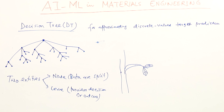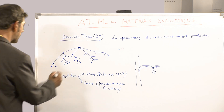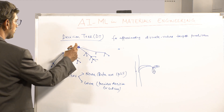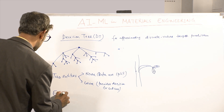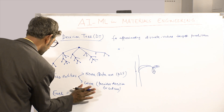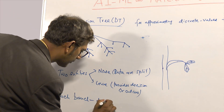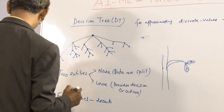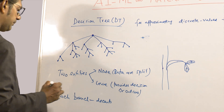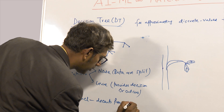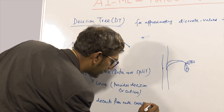The node and the leaf are the two important things to remember. The nodes are basically humidity, wind, and outlook — that is where data is split. The leaves are high humidity, low humidity, strong wind, and weak wind. Each branch descends from a node corresponding to one possible value for that attribute or feature.